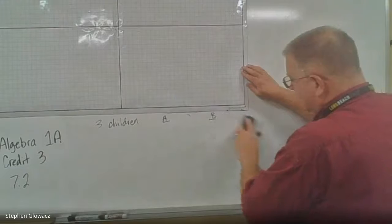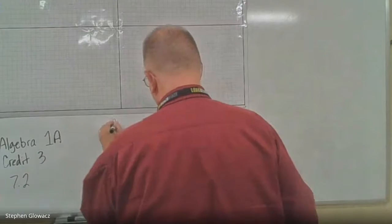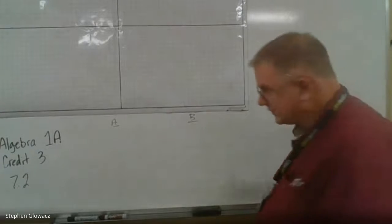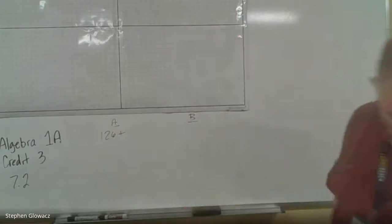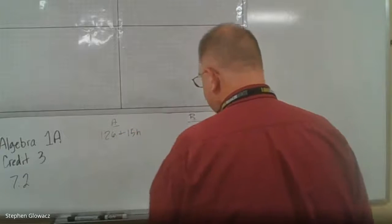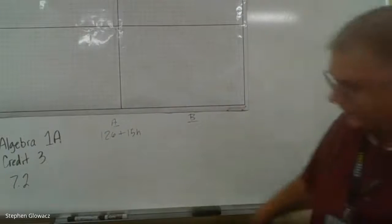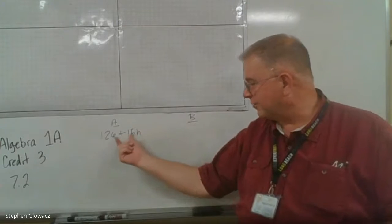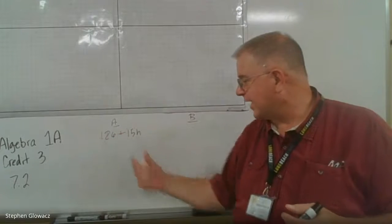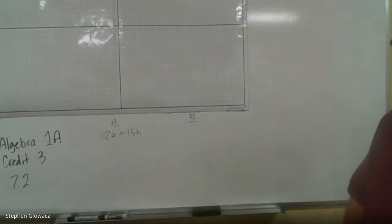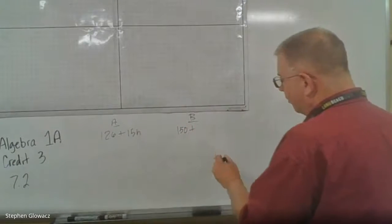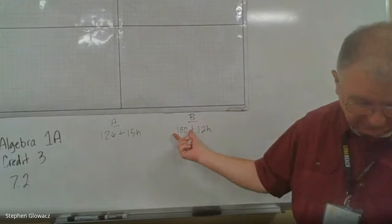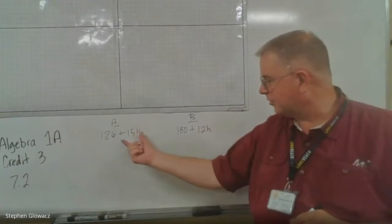Jeweler A: $126 plus $15 per hour, so 126 plus 15H. The $126 is the initial flat fee, and $15 is the rate for every hour worked. Jeweler B: $150 plus $12 per hour, so 150 plus 12H. The initial fee is $150, and they charge $12 per hour. This matches answer choice B — the order is reversed, but by the commutative property, 126 plus 15H equals 15H plus 126.